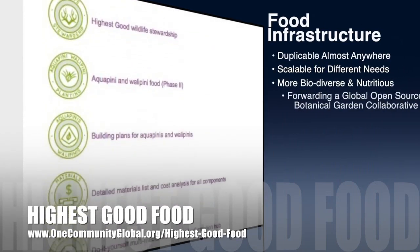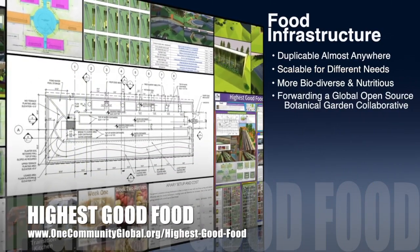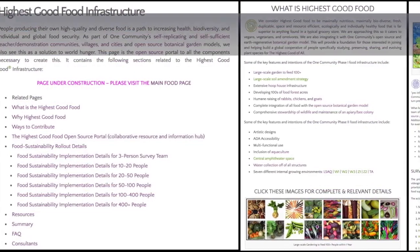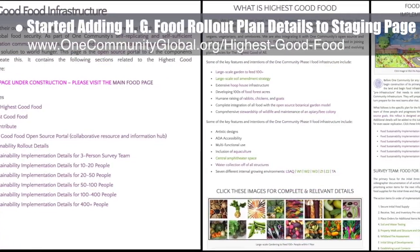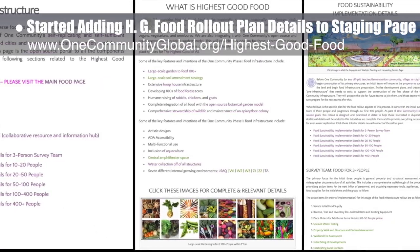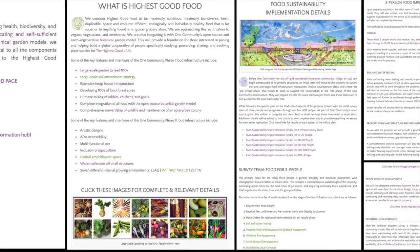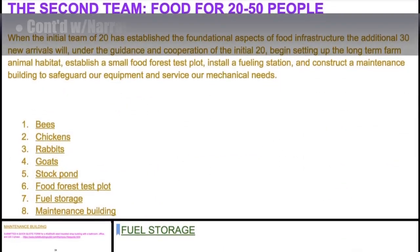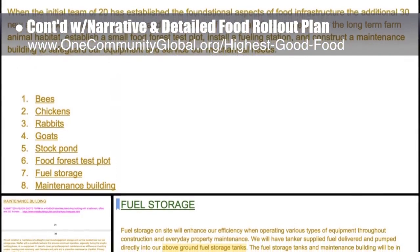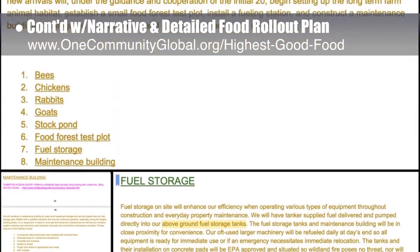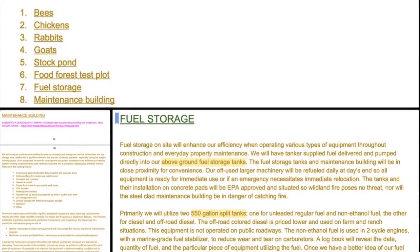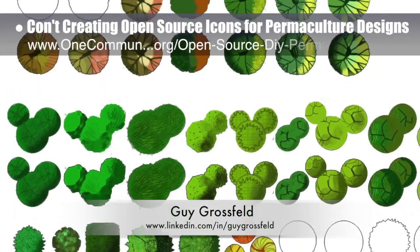One Community's approach to highest good food is duplicable almost anywhere, scalable for different needs, more biodiverse and nutritious, part of forwarding a global open source botanical garden collaborative, and includes nine different free shared and duplicable growing environments. This week the core team started adding all the highest good food rollout plan details to a staging page — rebuilding the menus, updating all formatting, rewriting the what and why sections, and adding completed details for the initial three-person survey team. The core team also continued writing the behind-the-scenes narrative for the detailed food rollout plan, writing initial rollout details covering food infrastructure for the first 20 to 50 people on the property, a newly added component maintenance building, and a fuel storage summary.